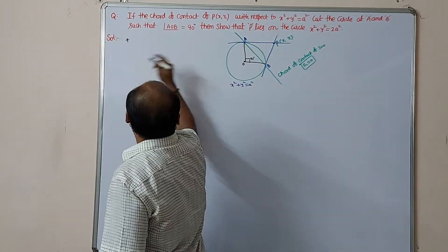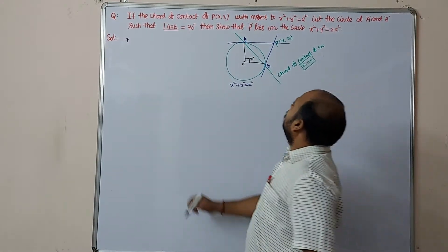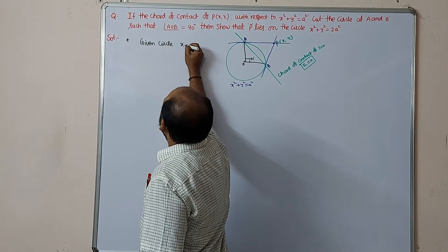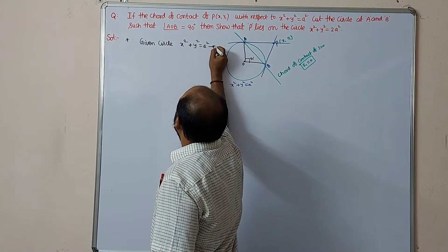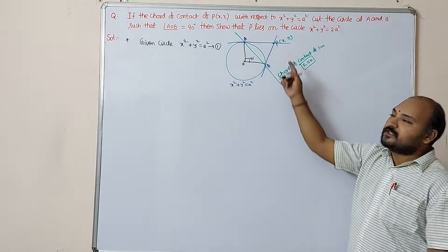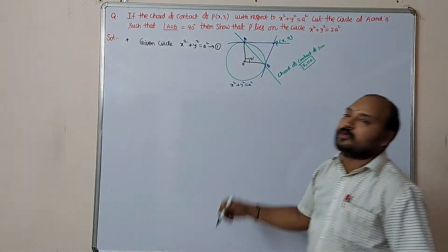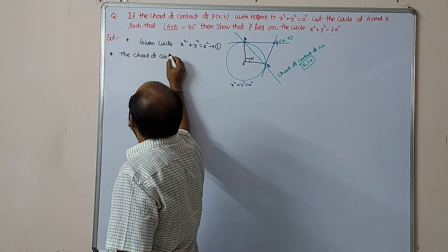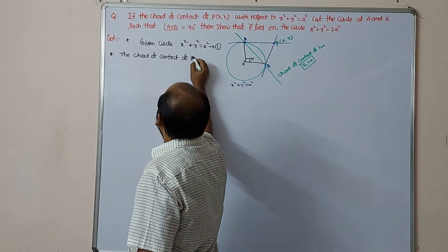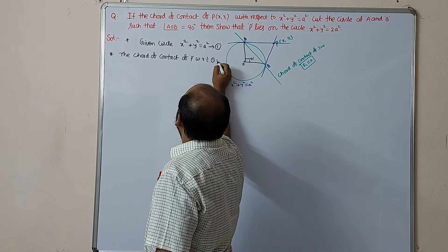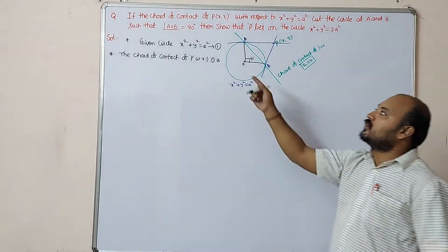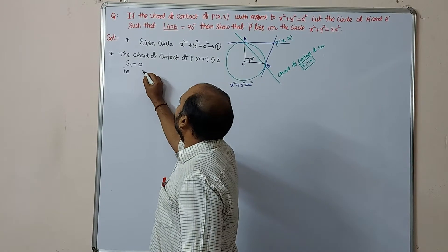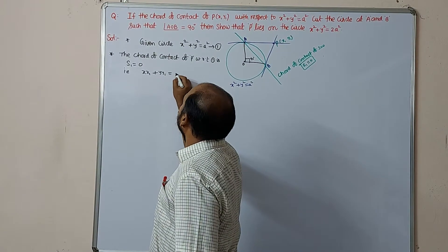According to the figure, write the steps properly. First, the given circle is x² + y² = a² — call this equation 1. Next, the chord of contact of point P with respect to equation 1 is S₁ = 0, that is xx₁ + yy₁ = a² — call this equation 2.